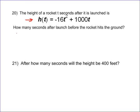The graph of this is going to look something like this. So when it hits the ground — this is the t-axis and this is the h(t)-axis, the height — when it hits the ground, the t we don't know, but the height is equal to zero at that point.